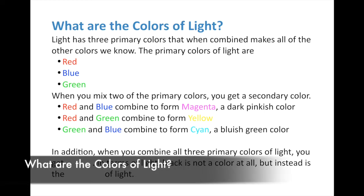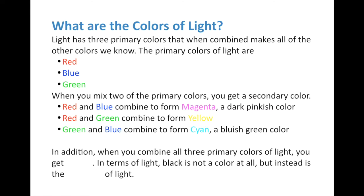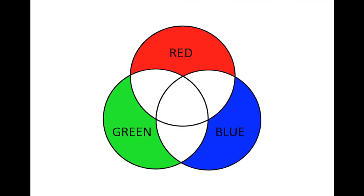So what are the colors of light? Light has three primary colors and when combined makes all the other colors we know. The primary colors of light are red, blue, and green. If you're in my class you have this Venn diagram and we're going to color and label them in. Color in the primary colors: red at the top, blue on the right, and green on the left. These are the actual computer-generated code for the colors, so red is completely red, blue is completely blue, and green is completely green.